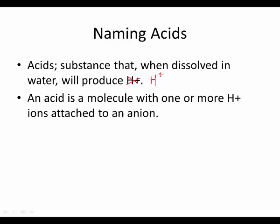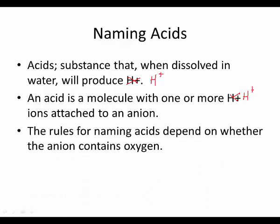So an acid is a molecule with one or more hydrogen ions attached. The rules for naming the acids depend on whether the anion contains oxygen or doesn't. So there's going to be two types of acids. There's going to be oxy acids and then just binary acids.